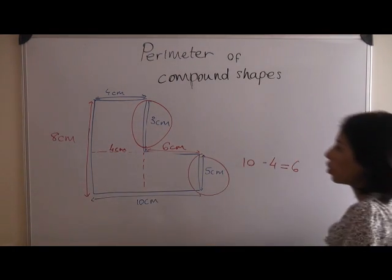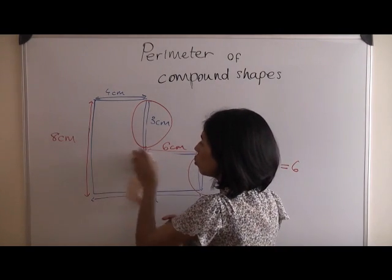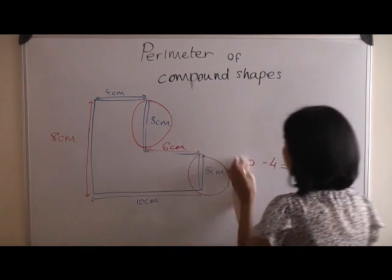Now what you're going to do is, you're going to disregard this measurement here. You don't want to get that included into your totaling of the perimeter.